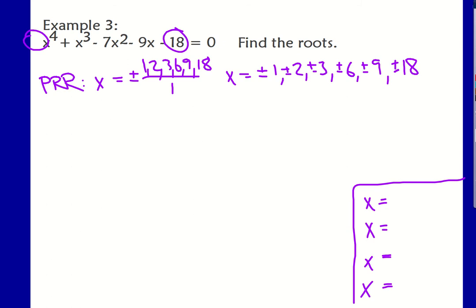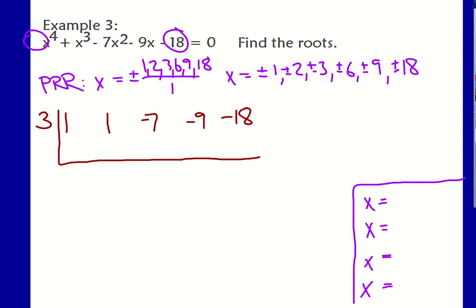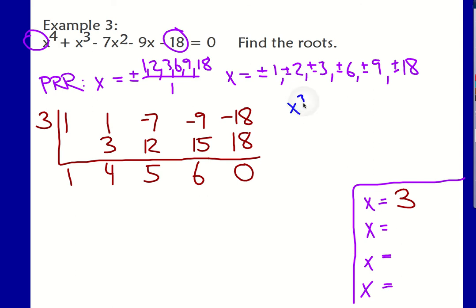I'm just feeling like I want to start by trying x equals 3 and see if that works. The coefficients of the polynomial are 1, 1, negative 7, negative 9, negative 18. I'm going to drop down the 1 and then multiply and add, multiply and add, multiply and add, multiply and add. Look at that — I've got a remainder of 0. x equals 3 is a win. However, what I have left is a cubic: x cubed plus 4x squared plus 5x plus 6 equals 0, which has four terms but does not factor by grouping. I can tell that because the coefficients are not in the same ratio.